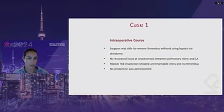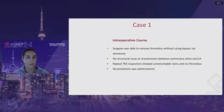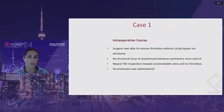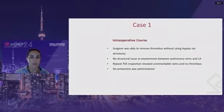The surgeon was able to remove the thrombus without using bypass — he performed an atriotomy and suctioned out the clot. Per the surgeon, there were no structural issues at the anastomosis between the pulmonary veins and left atrium. Repeat TEE inspection of the veins showed an unremarkable anastomosis, no thrombus, and no elevated or increased flows. No protamine was administered.